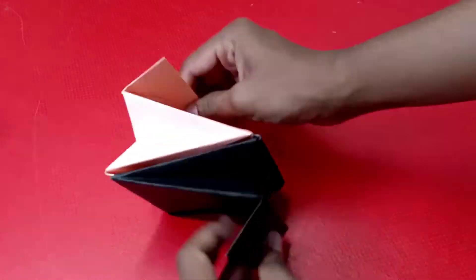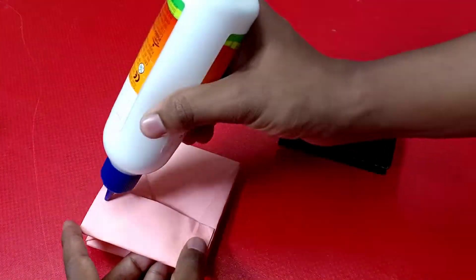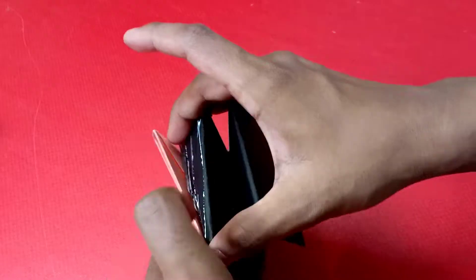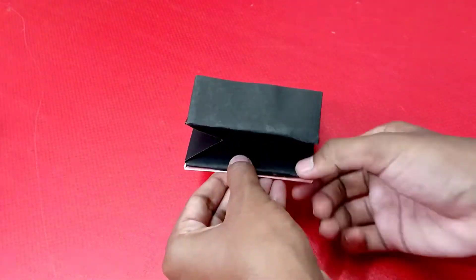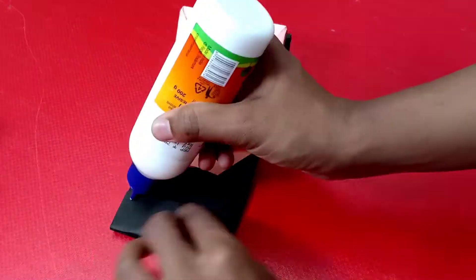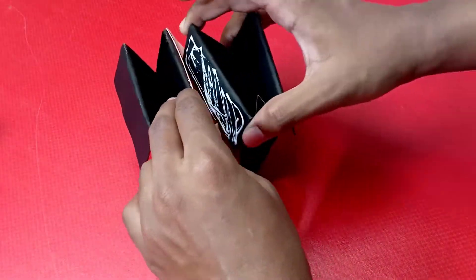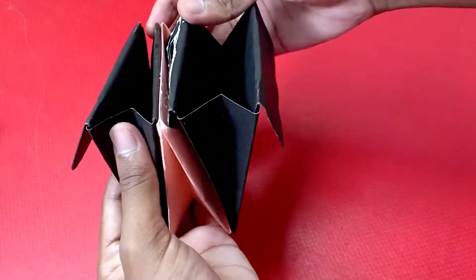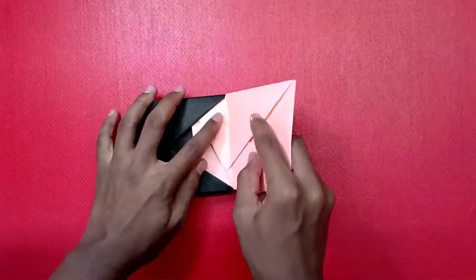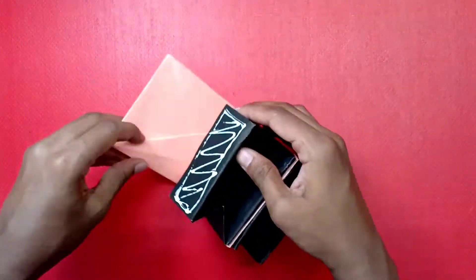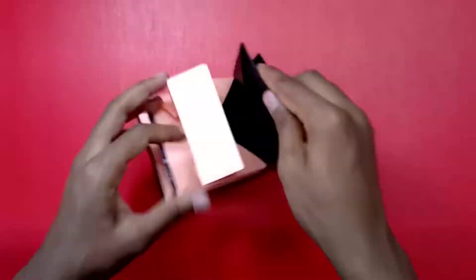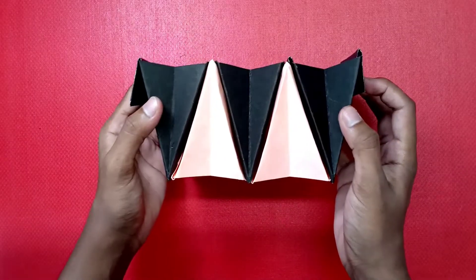And then push this flap into the other one. Likewise you have to do for the rest of the pieces. It is optional that you can also apply glue onto the flap and insert them in the pockets. With that, your Portable Desk Organizer is done.